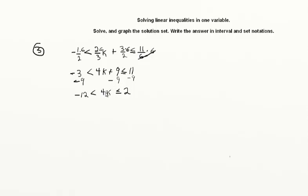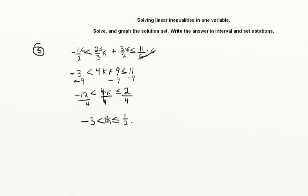Now we divide by four. There are no negatives here so we keep the signs the same. Two over four is one half, and negative twelve over four is negative three. So we have negative three is less than k, which is less than or equal to one half. We found the values of k that make this inequality true: values just slightly greater than negative three, all the way up to one half inclusive, because the inequality allows k to equal one half.